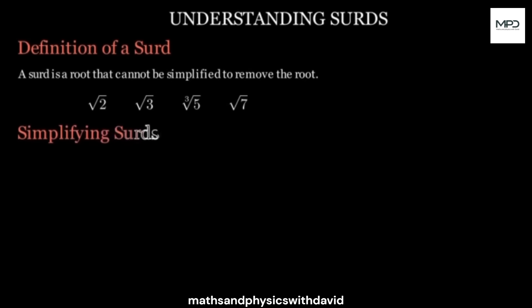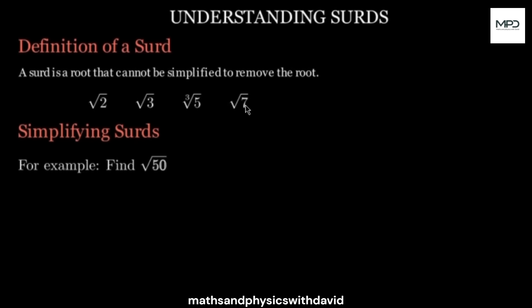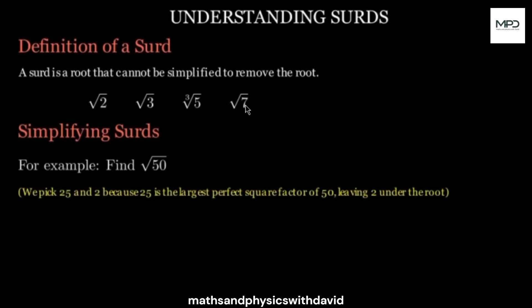We are going to be looking at a few examples quickly. Let's talk about how to simplify surds. For instance, we have the square root of 50. To simplify the square root of 50, we need two numbers: one must be a perfect square and the other must be a number that is not a perfect square and does not have a perfect square inside it. We can use 25 and 2, because 25 is a perfect square and 2 is not a perfect square and does not have a perfect square inside of it.